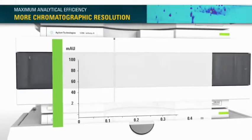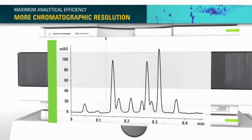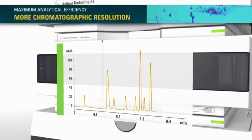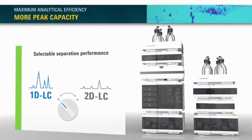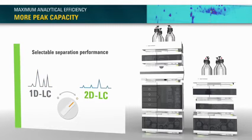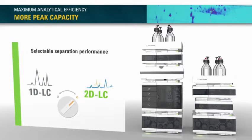Lowest extra column band broadening and highest data rates result in more chromatographic resolution. Achieve highest peak capacity by switching easily between single-dimension UHP-LC and the power of two-dimensional LC.